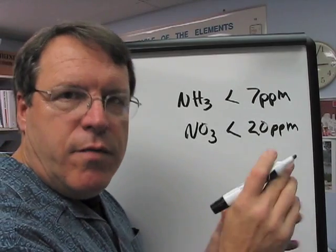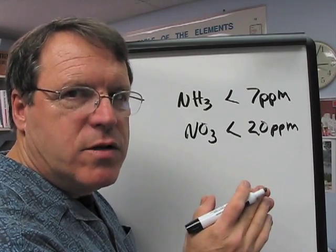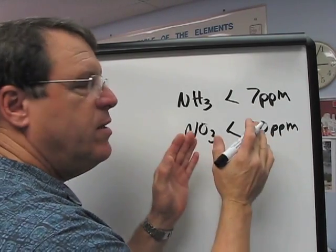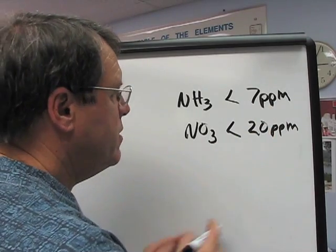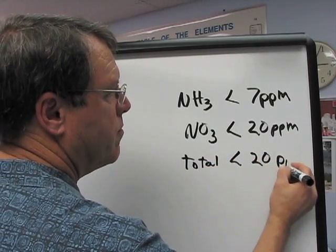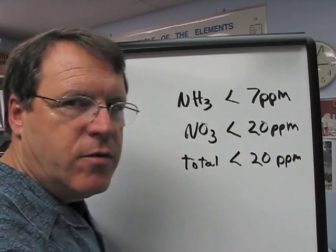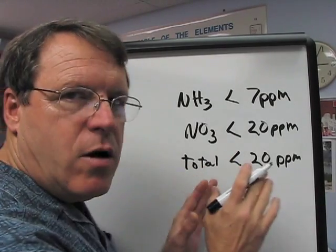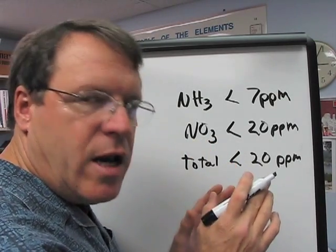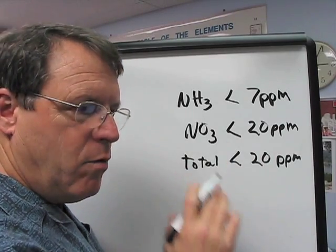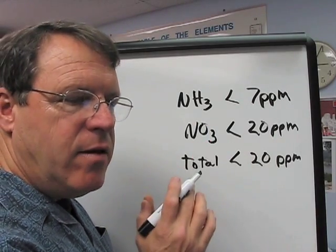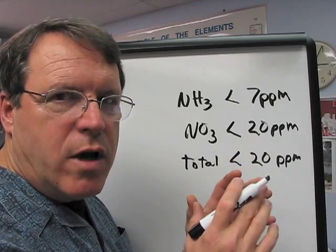That nitrate level is actually equivalent to an application of about one pound of N per thousand square feet — that's a high level of nitrogen, so we don't like to see it that high. Our total of less than 20 parts per million covers these two factors combined: ammonium and nitrate nitrogen. This is not measuring organic nitrogen in the soil; you always have to account for organic nitrogen in the soil, depending on how much organic matter you have, which will release through the season the same way that organic fertilizers release nitrogen. You almost have to add that organic nitrogen release into your total nitrogen use.